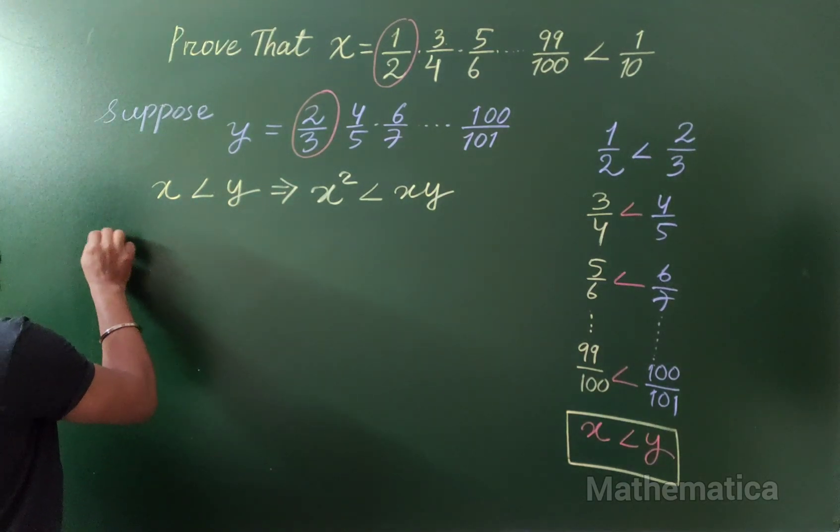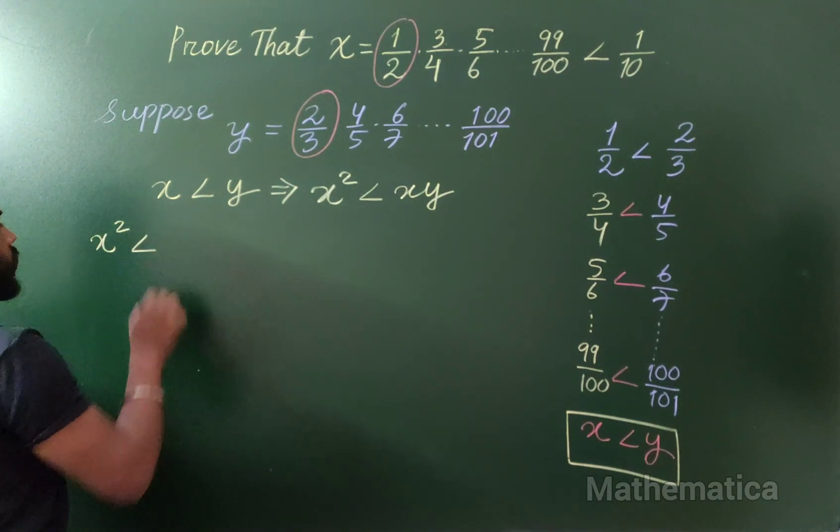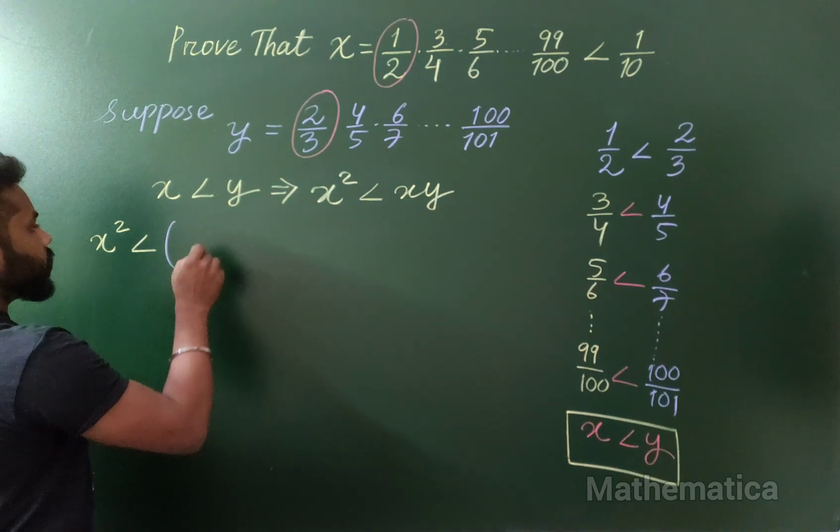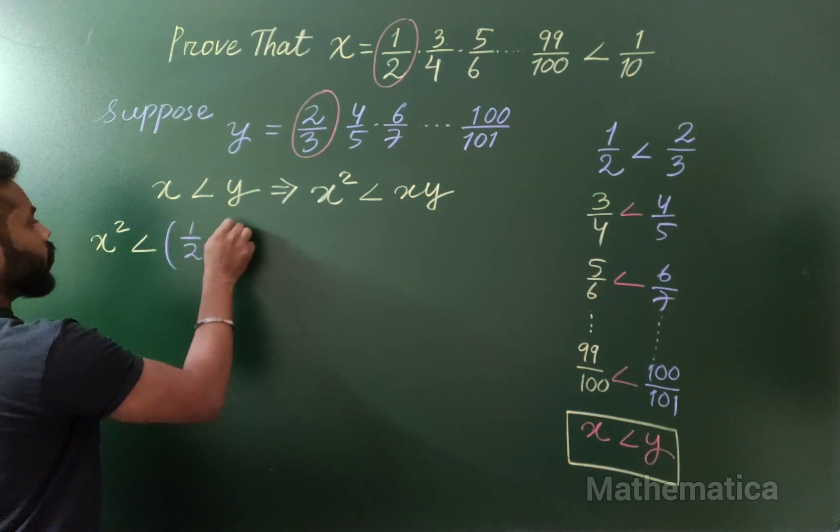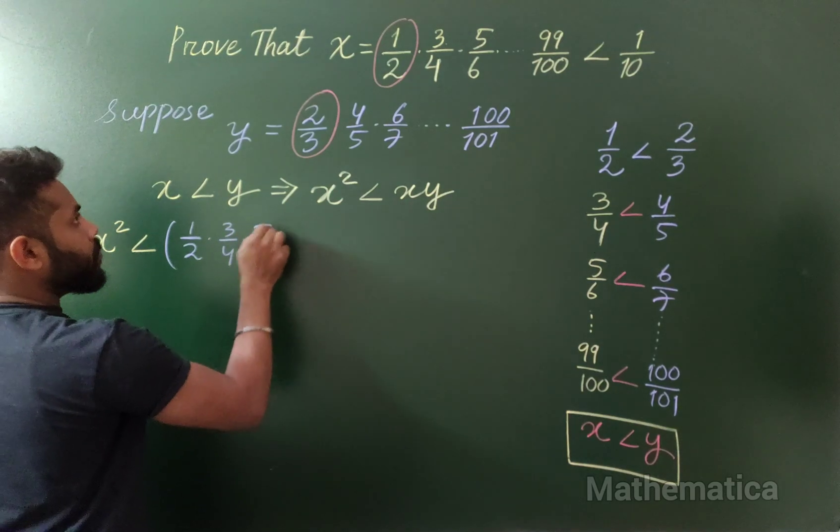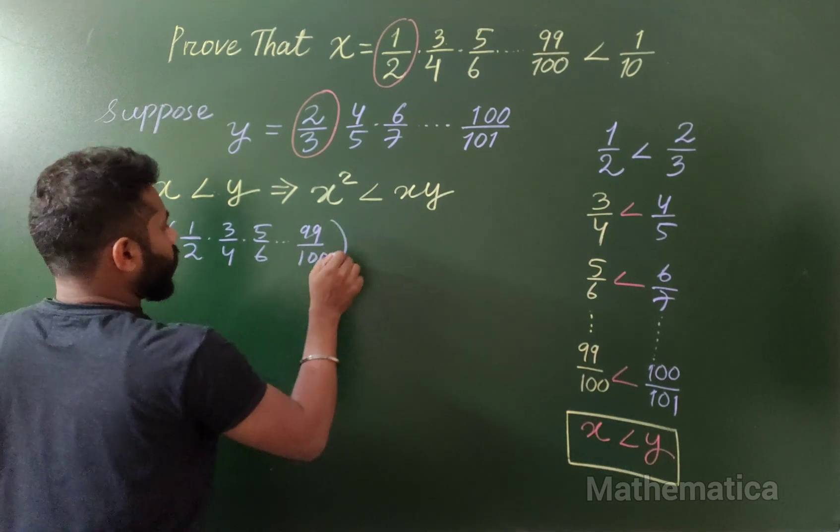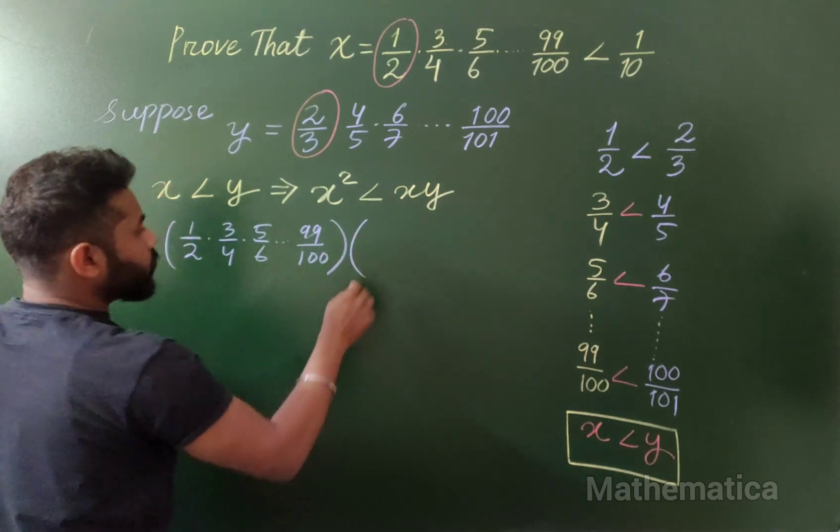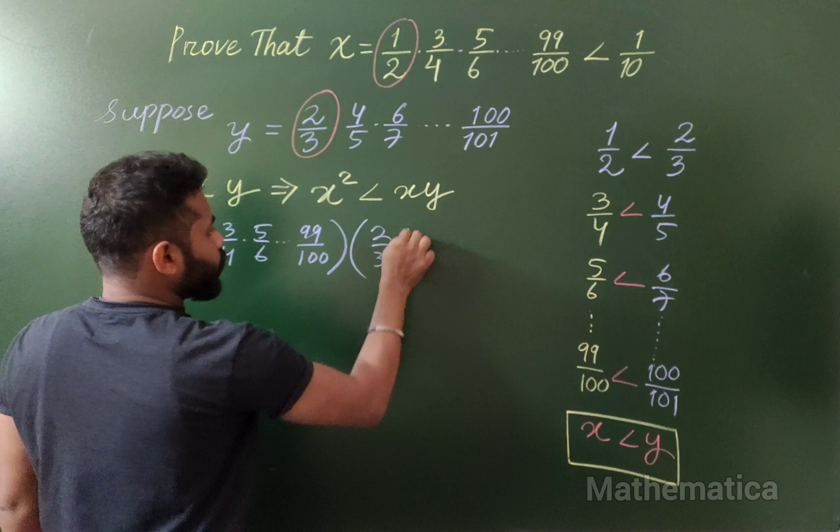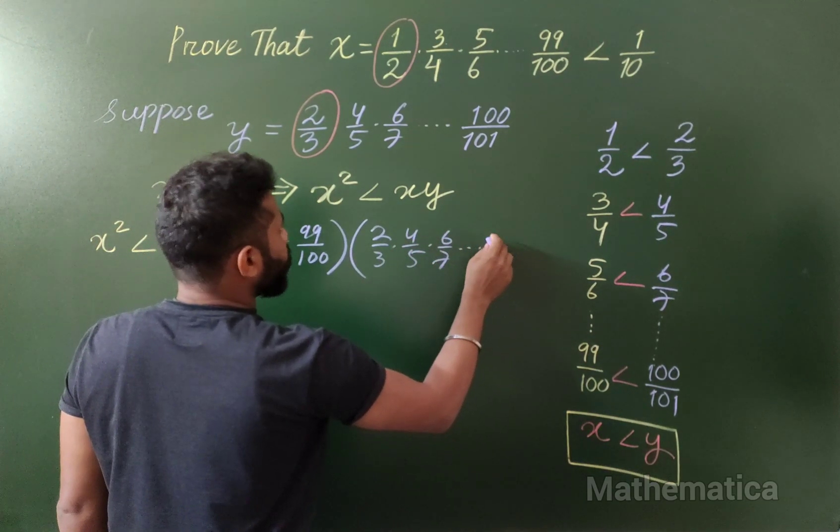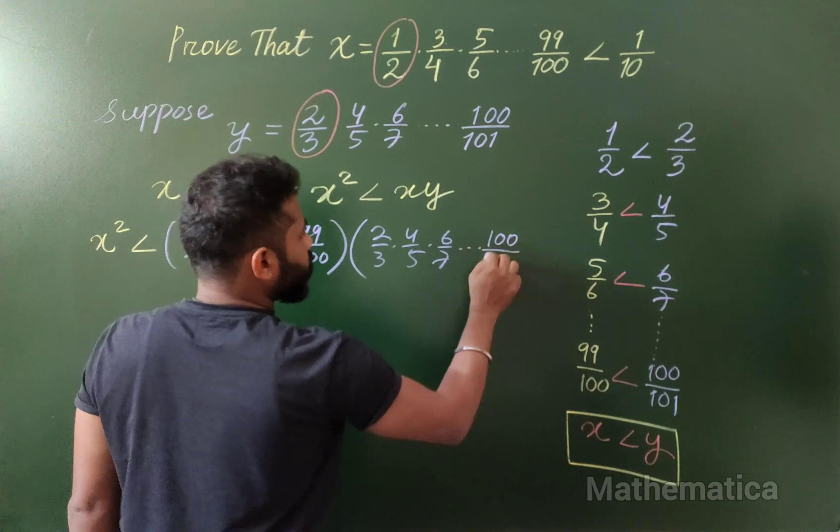So now x² < xy where x is 1/2 × 3/4 × 5/6, all the way up to 99/100, and y is 2/3 × 4/5 × 6/7, all the way up to 100/101.